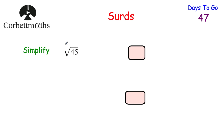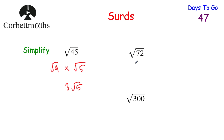Now let's look at simplifying surds. If I was asked to simplify the square root of 45, I'd look for the largest square number that's a factor of 45, and that would be 9. So I'm going to split root 45 into root 9 multiplied by root 5, because 9 times 5 is 45. The square root of 9 is 3, so we get 3 root 5. For root 72, the largest square factor is 36, so root 36 times root 2 gives 6 root 2.